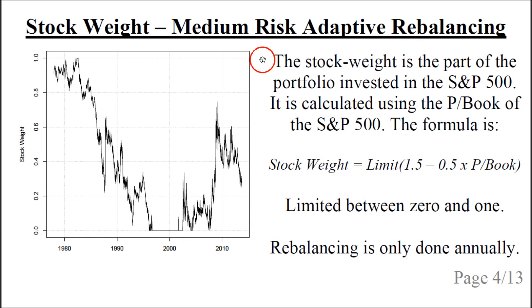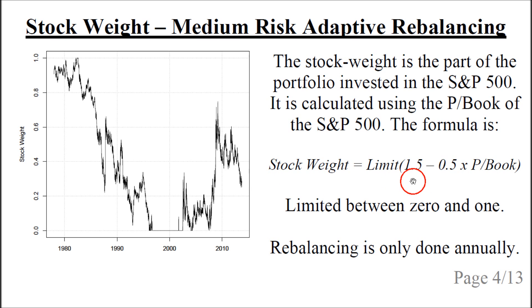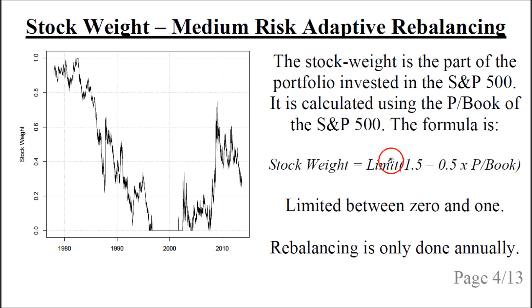The stock weight is the part of the portfolio invested in the S&P 500. It is calculated using the price-to-book ratio of the S&P 500. One formula for the medium risk strategy is: the stock weight equals 1.5 minus 0.5 multiplied by the price-to-book ratio. This is then limited between zero and one.